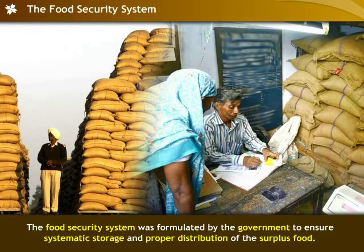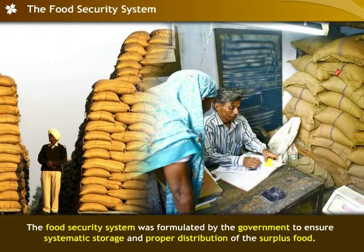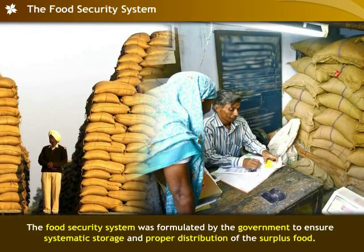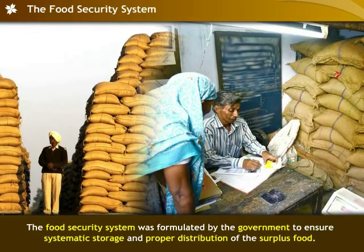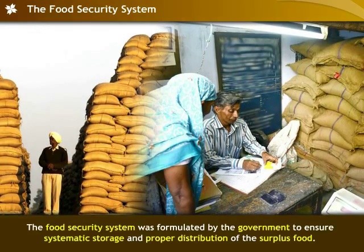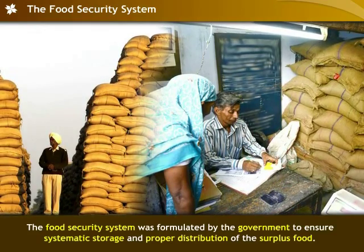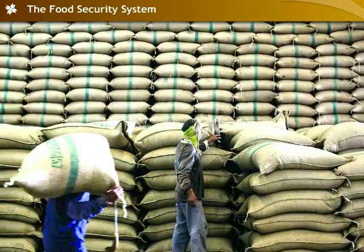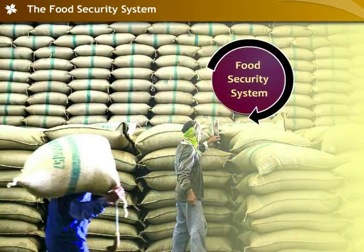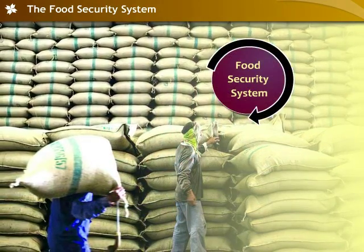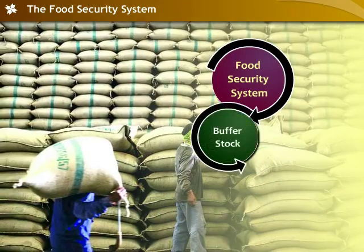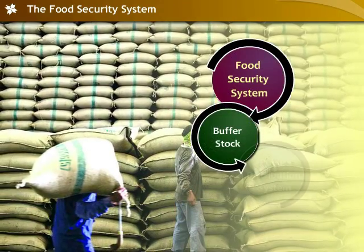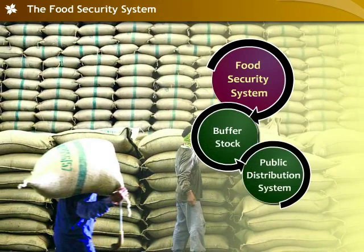The government formulated a food security system to ensure systematic storage and proper distribution of the surplus food. The two important stages in the food security system are buffer stock and the public distribution system.